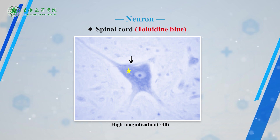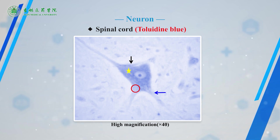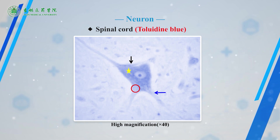The axon originates from a short pyramid-shaped region called the axon hillock. The red circle indicates the Nissl bodies. In contrast to dendrites, the axon maintains a constant diameter from one end to the other. The neurons are surrounded by a large number of spherical and oval nuclei that are neuroglial cells. The cytoplasm and processes of neuroglial cells are usually not stained, so only the nuclei can be seen.